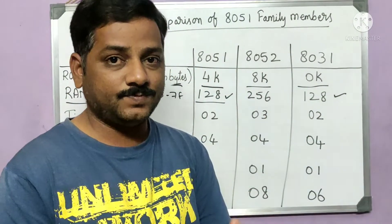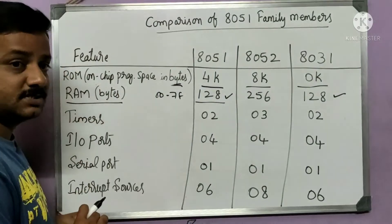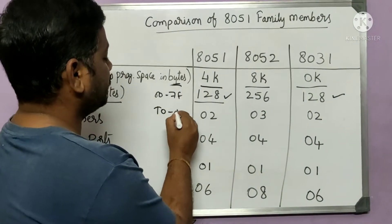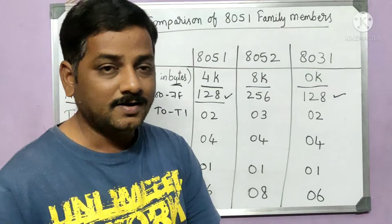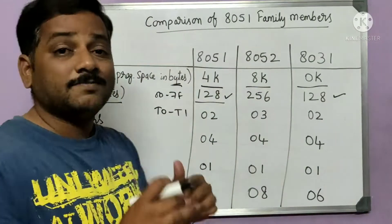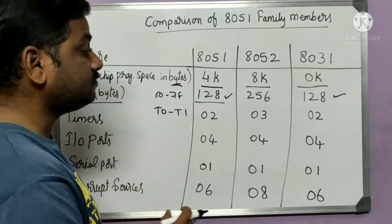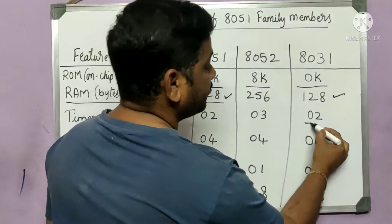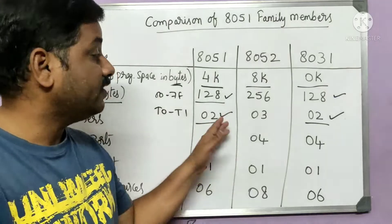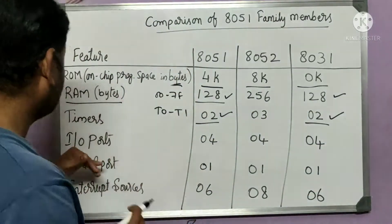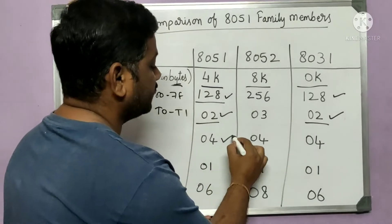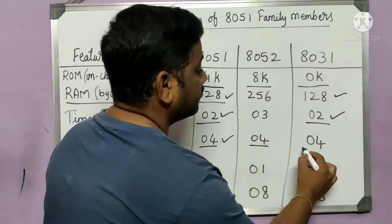For timers: the 8051 has two timers — Timer 0 (T0) and Timer 1 (T1). The 8052 has one additional timer, Timer 2. The 8031 is similar to the 8051, having the same two timers.